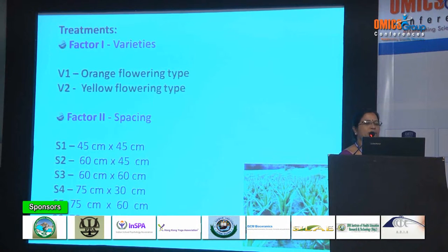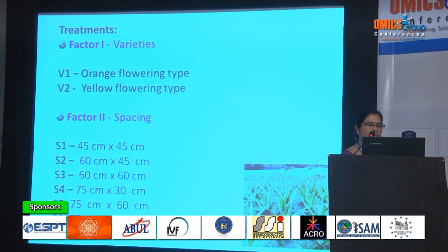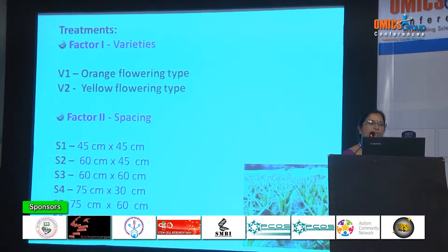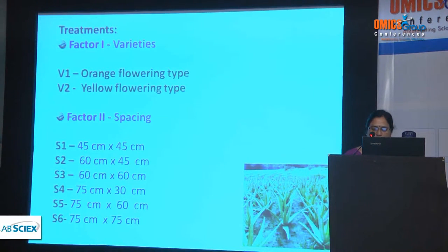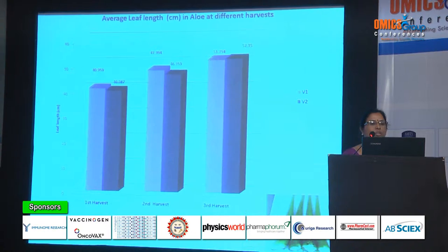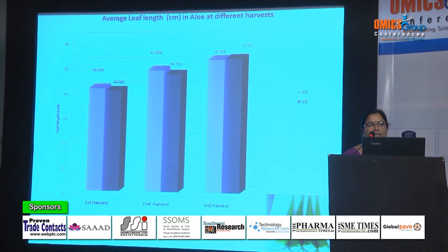I took 2 factors: two different varieties of aloe vera — one is the orange flowering type and another is the yellow flowering type. The second factor is spacing. I took 6 spacings: 45×45 cm, 60×45 cm, 60×60 cm, 75×30 cm, 75×60 cm, and 75×75 cm. Uniform cultural operations were followed for all treatments, and planting was done during the month of July.